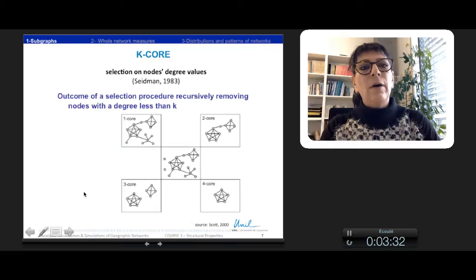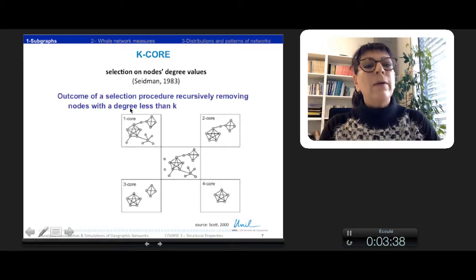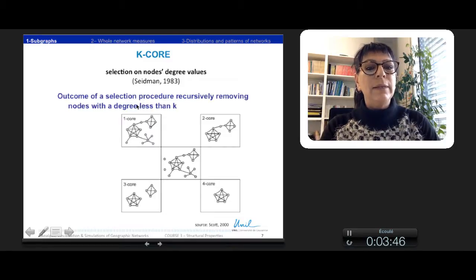Another kind of selection is also the selection on node's degree value. The K-Core is this kind of selection, that actually it is a recursive process, removing the nodes with a degree of less than K. Here we've got a graph at the center.